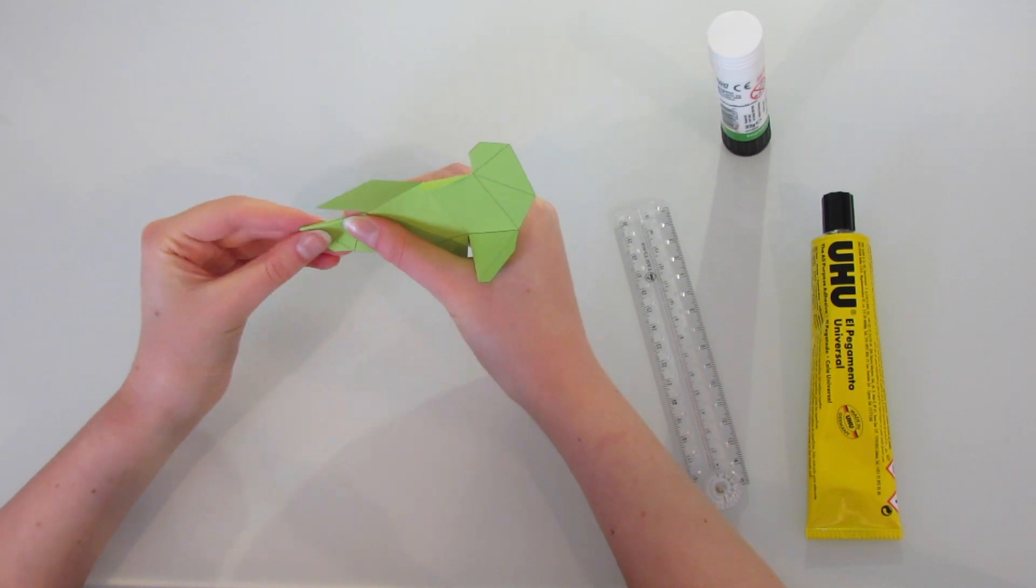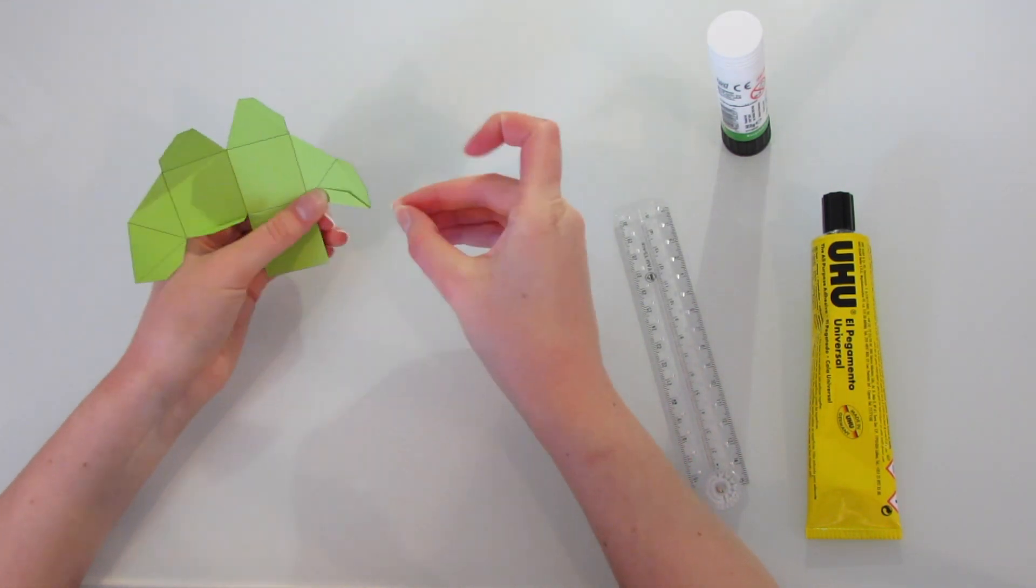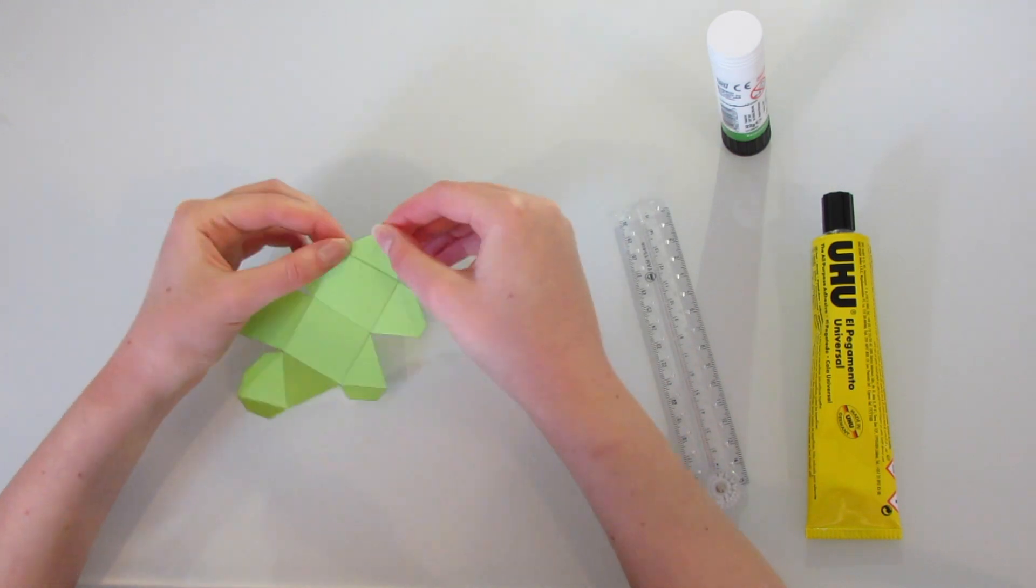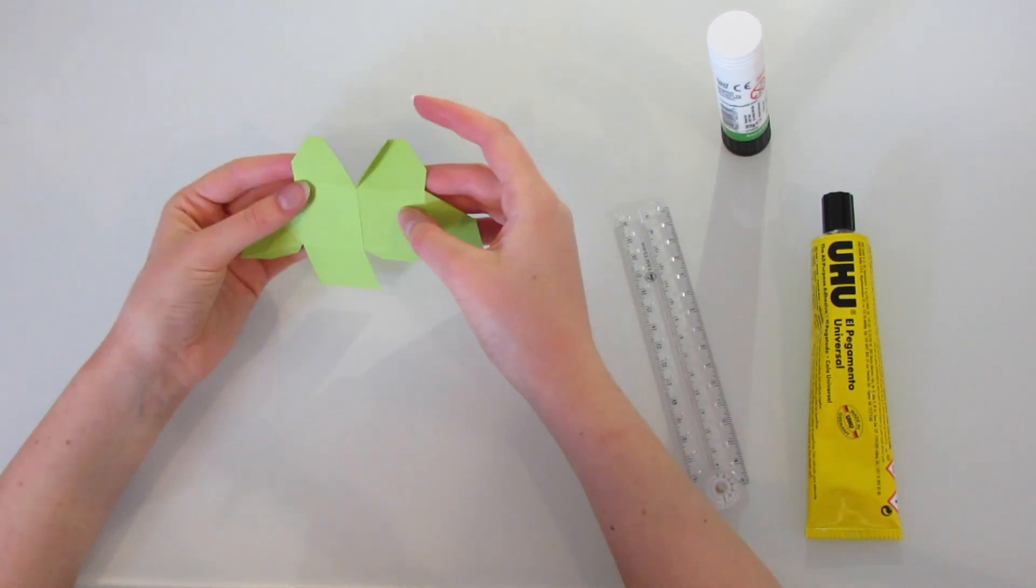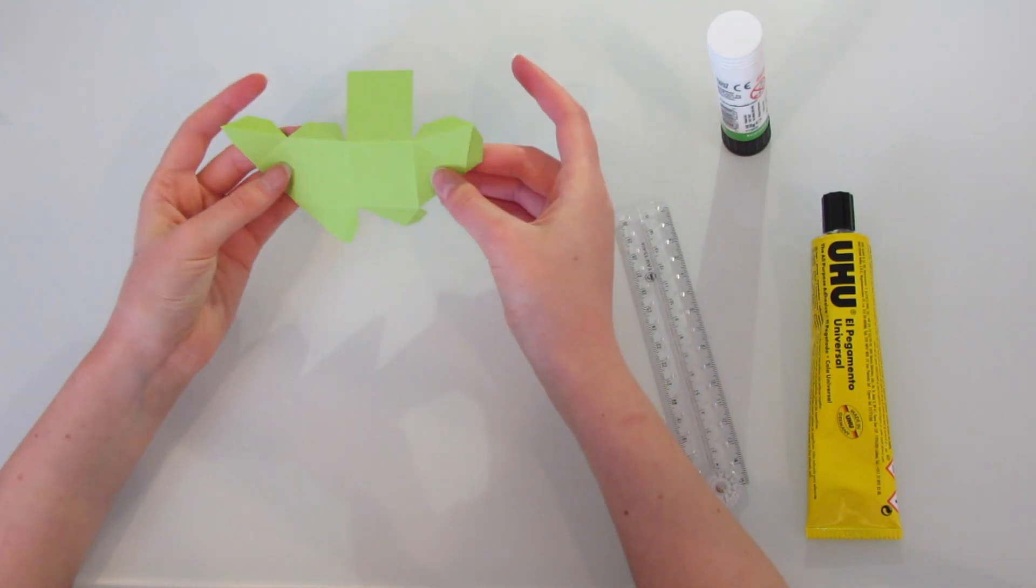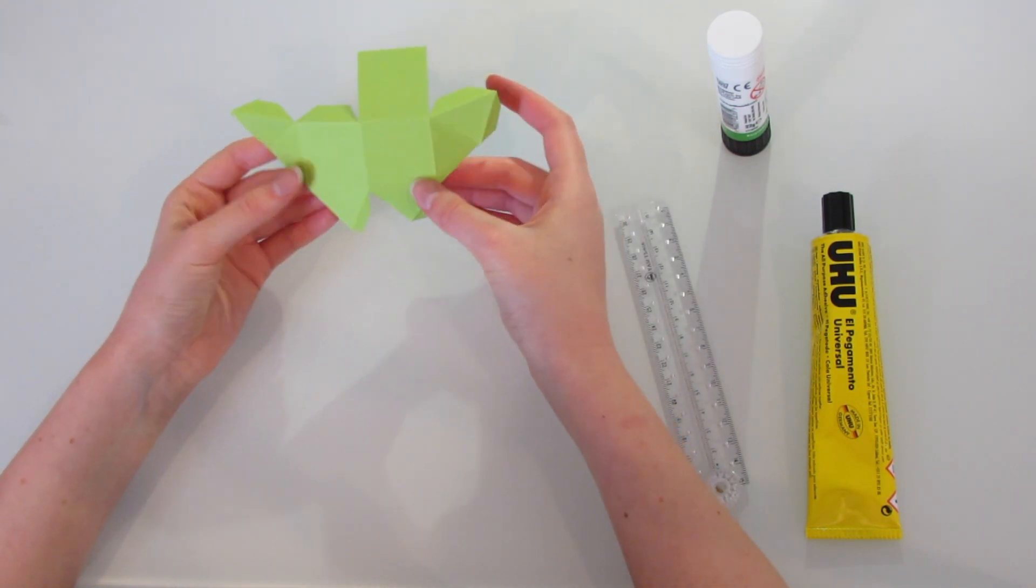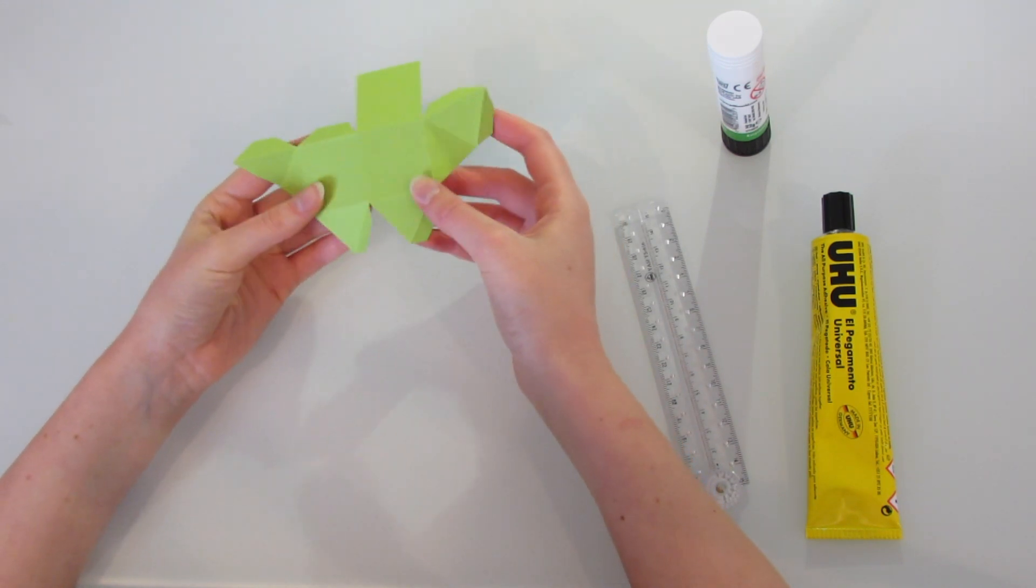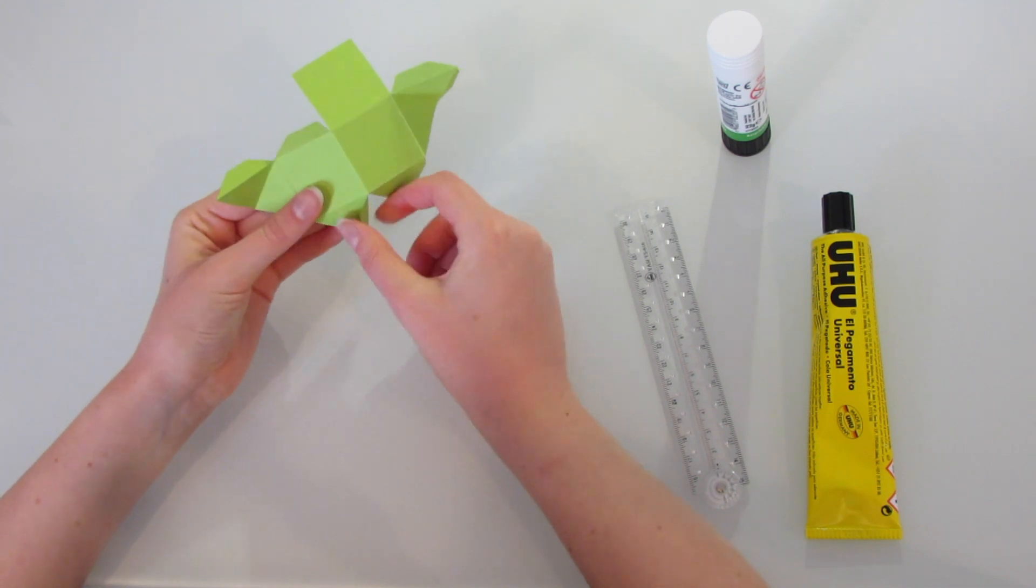It doesn't matter if you fold so the printed part is on the inside or outside, it just depends whether you prefer to have the lines on the final shape. Note that as the module is not convex, there are a few folds that need to go the other way, and folding them in the correct direction now will make the module come together much more easily when we glue it.